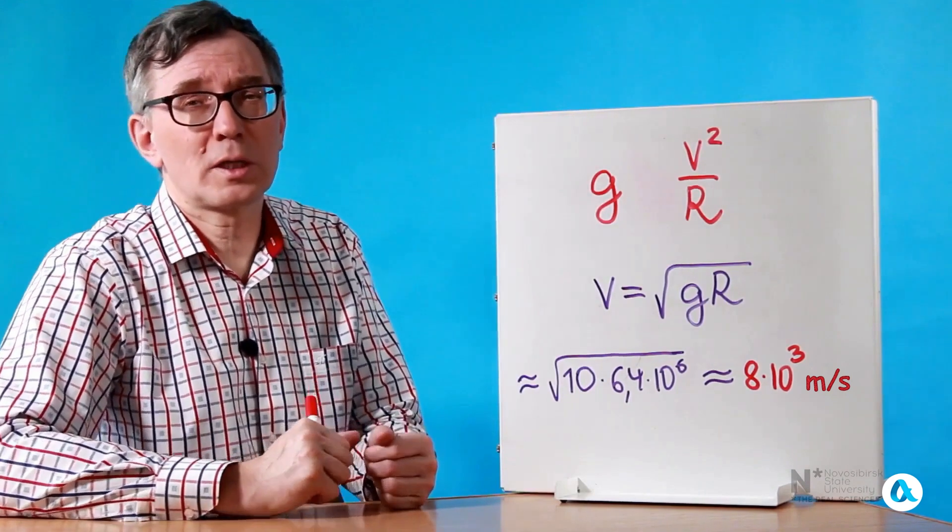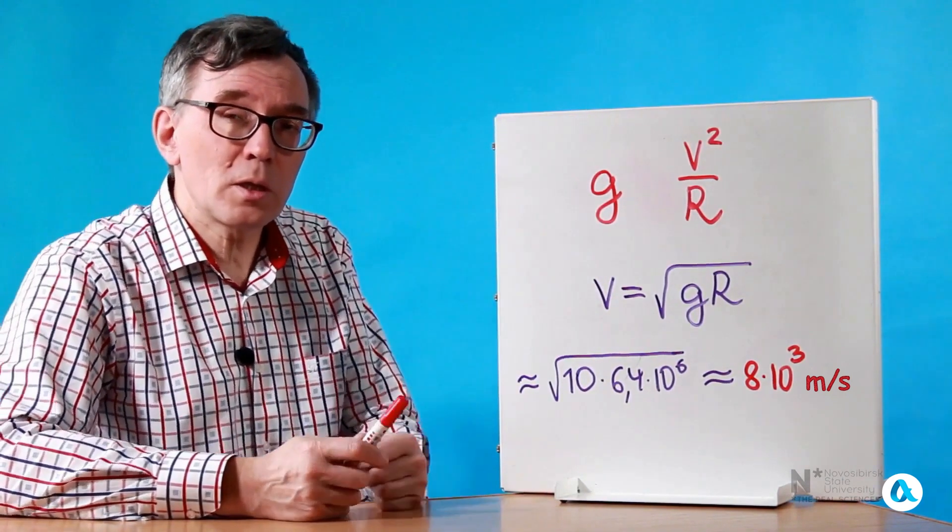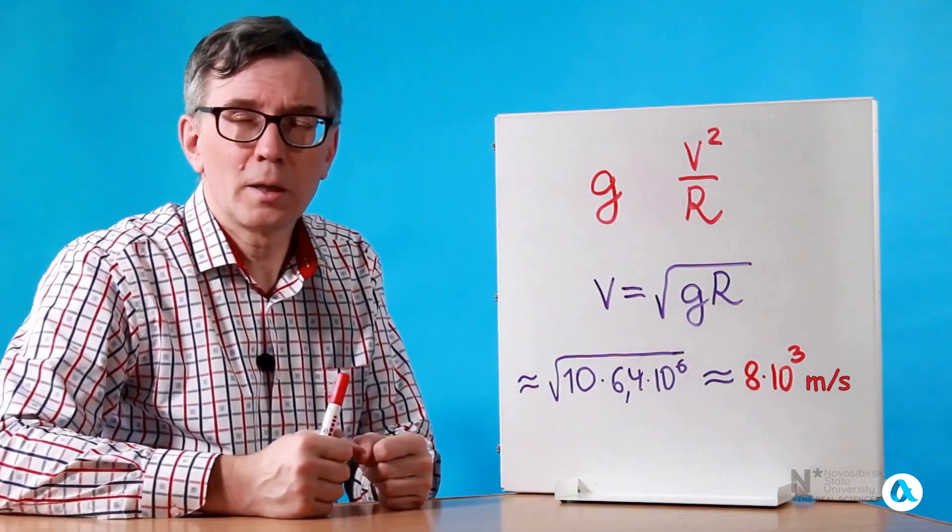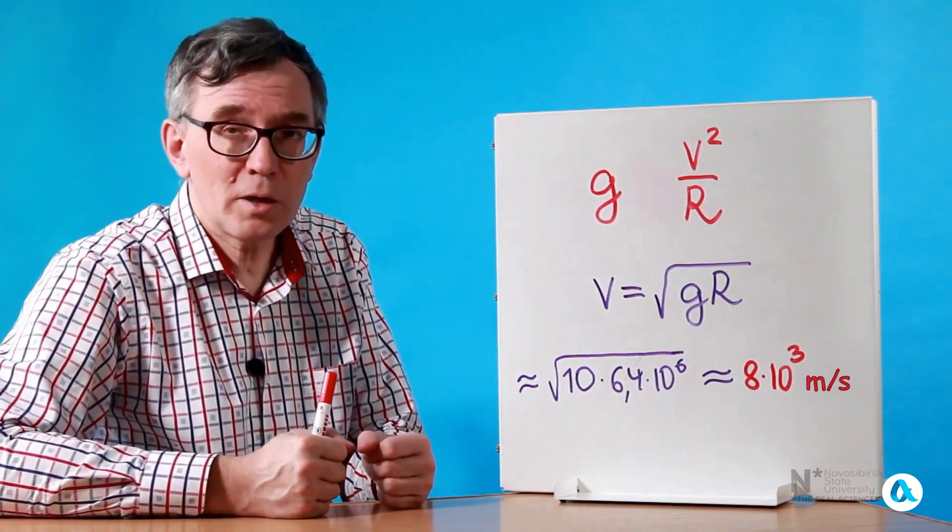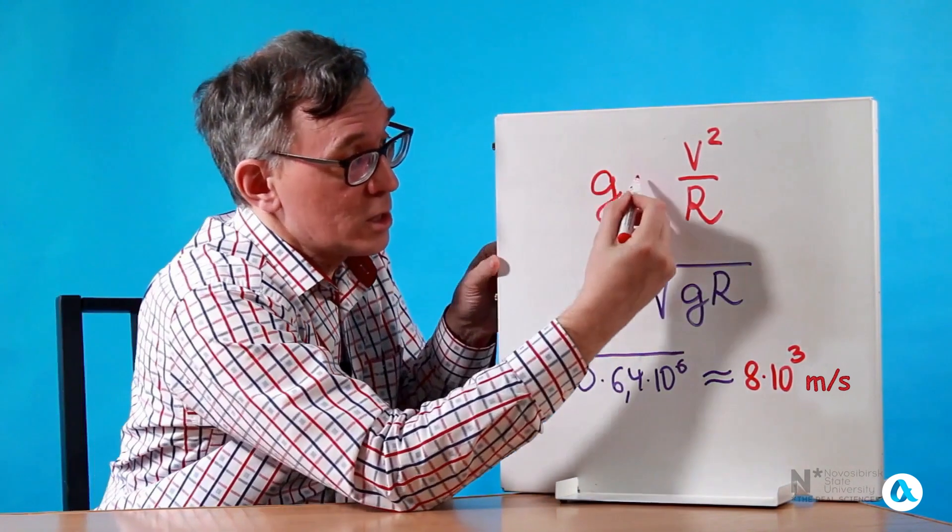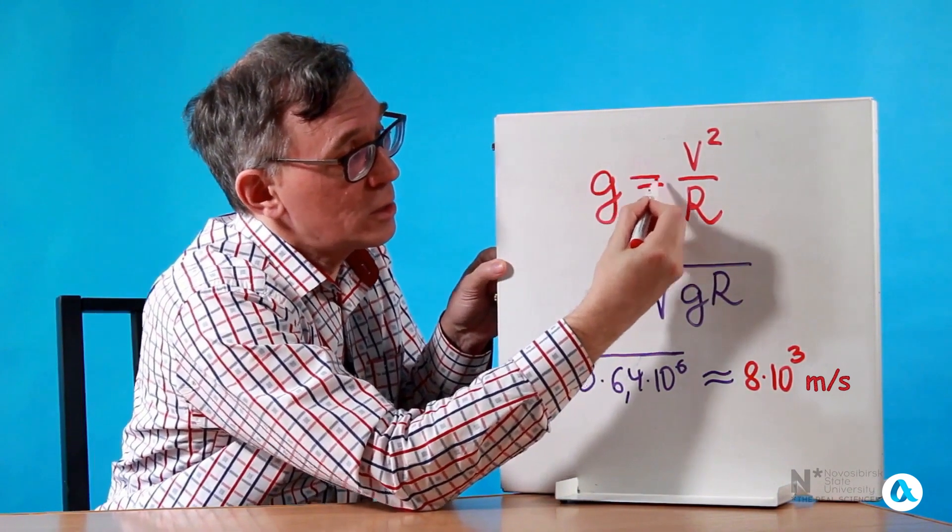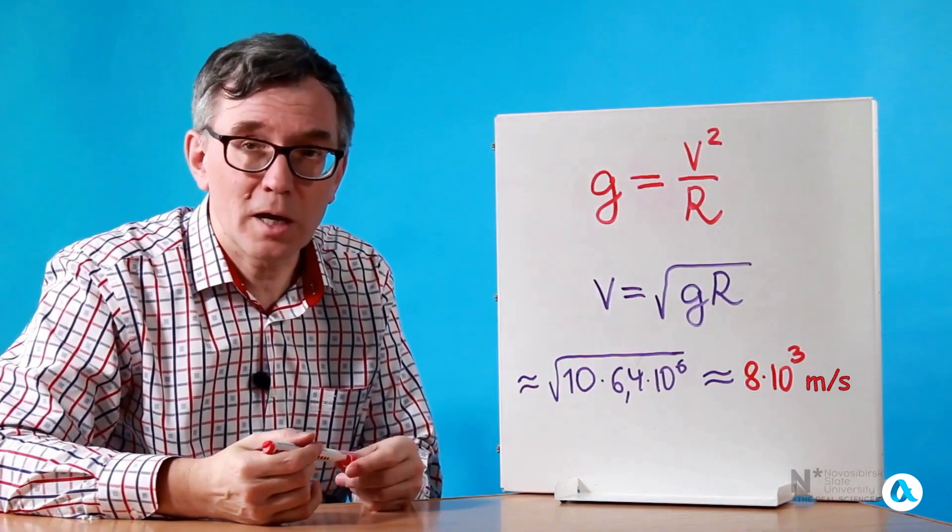On the other hand, a projectile moving in a circle experiences centripetal acceleration, which is V² divided by R. And it is obvious that this acceleration is imparted to it precisely by the force of gravity. So we can essentially equate G and the centripetal acceleration, which is V² divided by R.